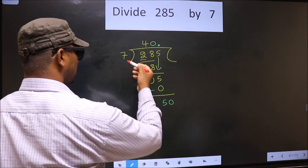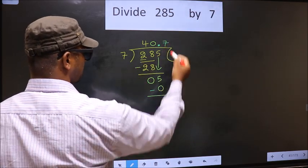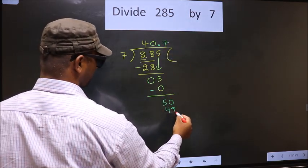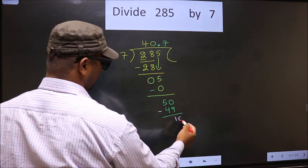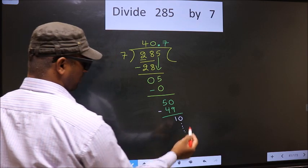A number close to 15, 7 table is 7 times 7, 49. Now you subtract, you get 1, take 0, continue the division. I am not doing it.